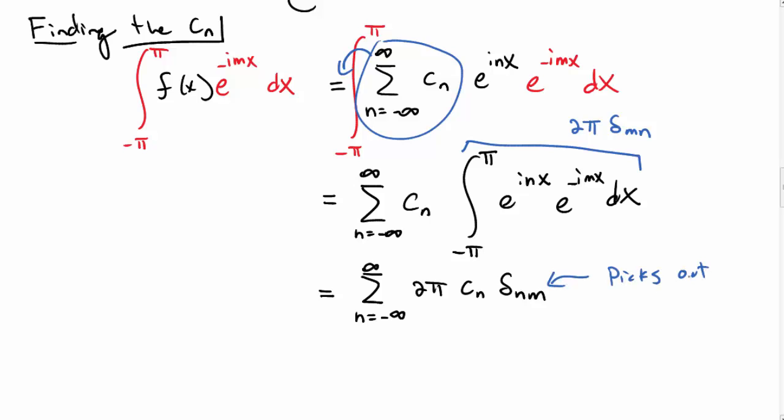Remember, the δ_mn only picks out the value when n happens to be equal to m. So from this infinite sum, we only get one value when n is equal to m. So we get 2π c_n. The left-hand side is still the same, f(x) e^(-imx) dx.